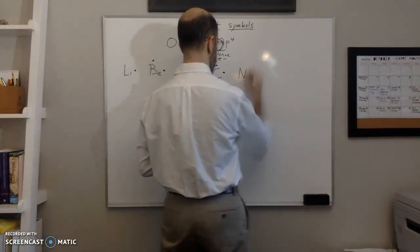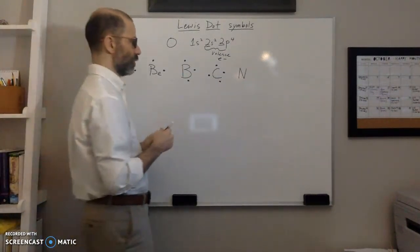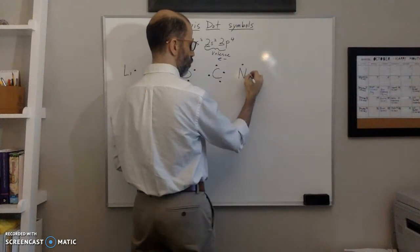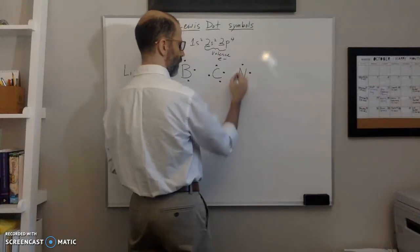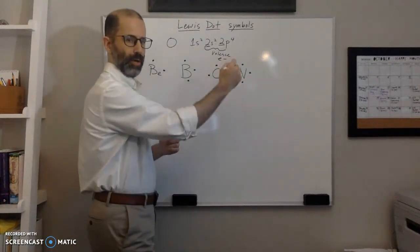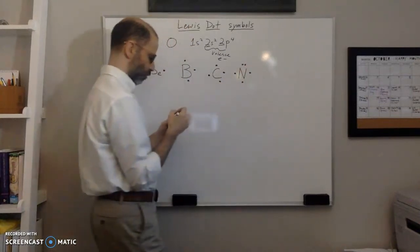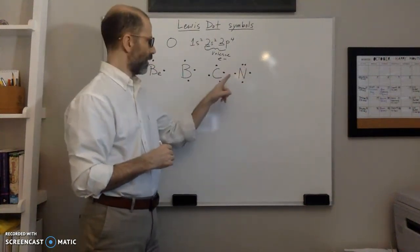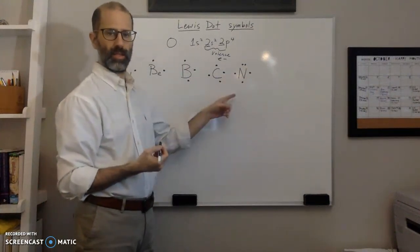Nitrogen has five valence electrons. Going around clockwise: one on top, one on the right, one on the bottom, one on the left — that's four. Now I have a fifth electron, so I go to the top again and pair up those electrons. Nitrogen ends up with one pair of electrons on top and single unpaired electrons on the other three sides.